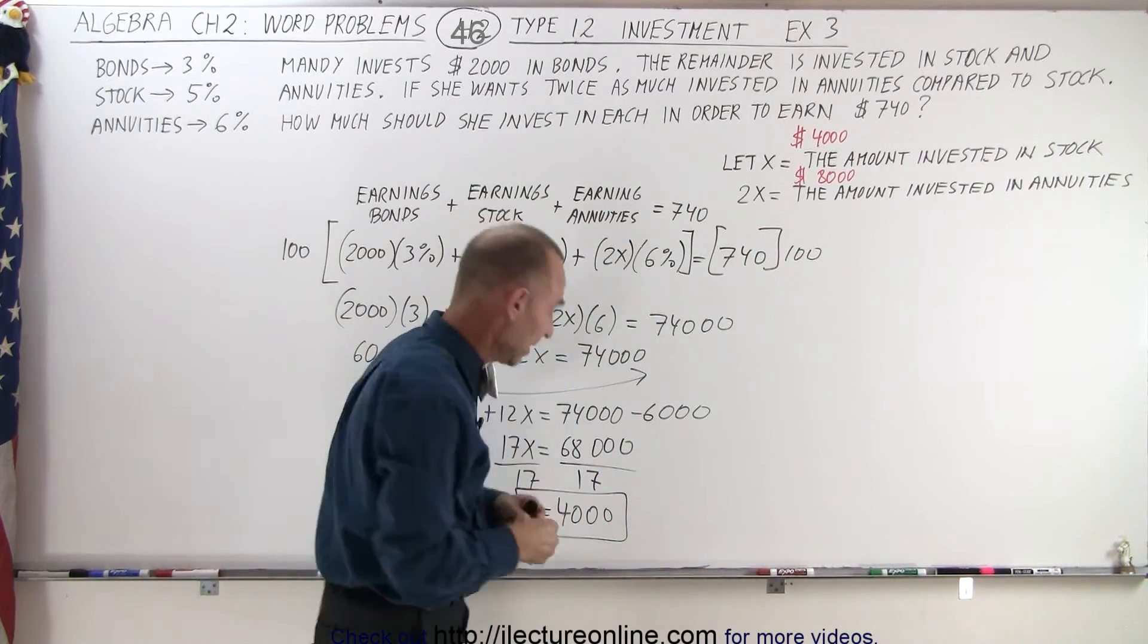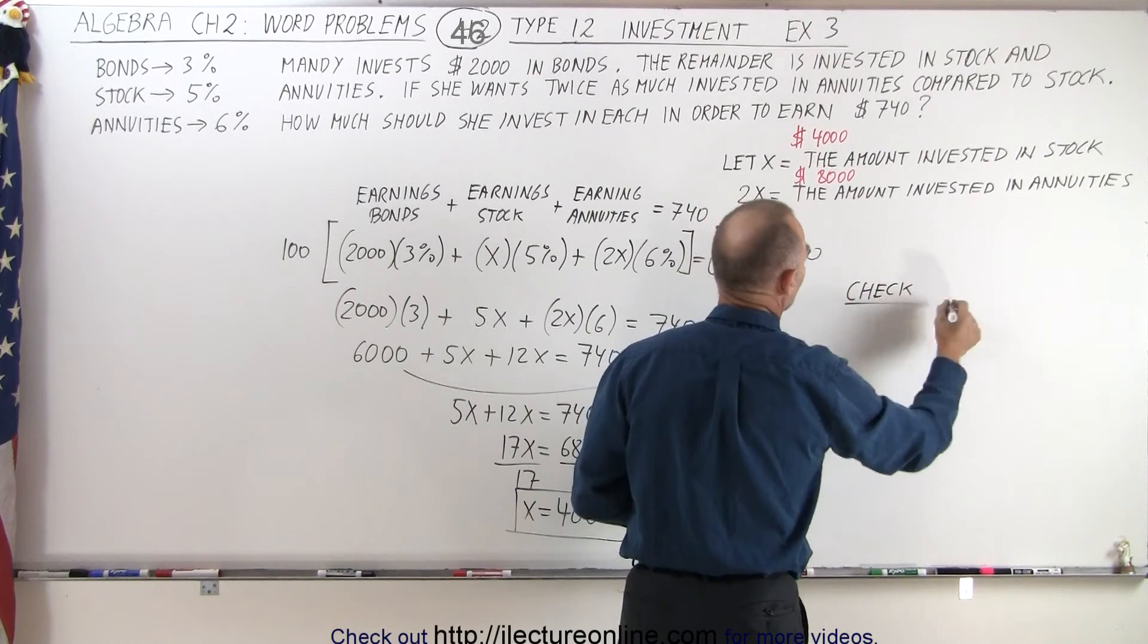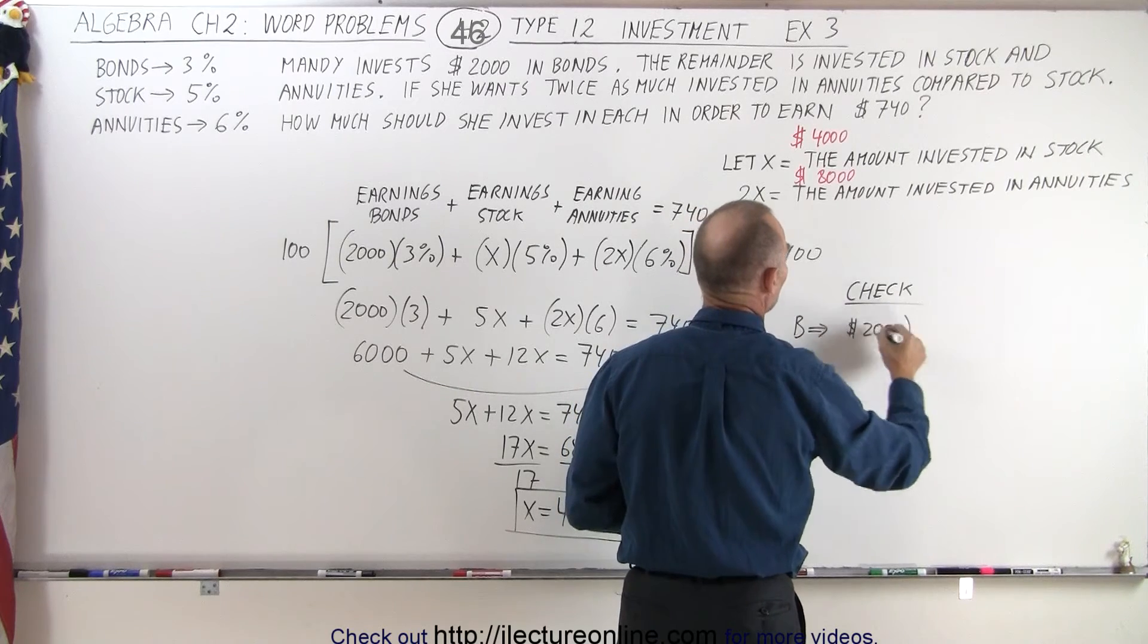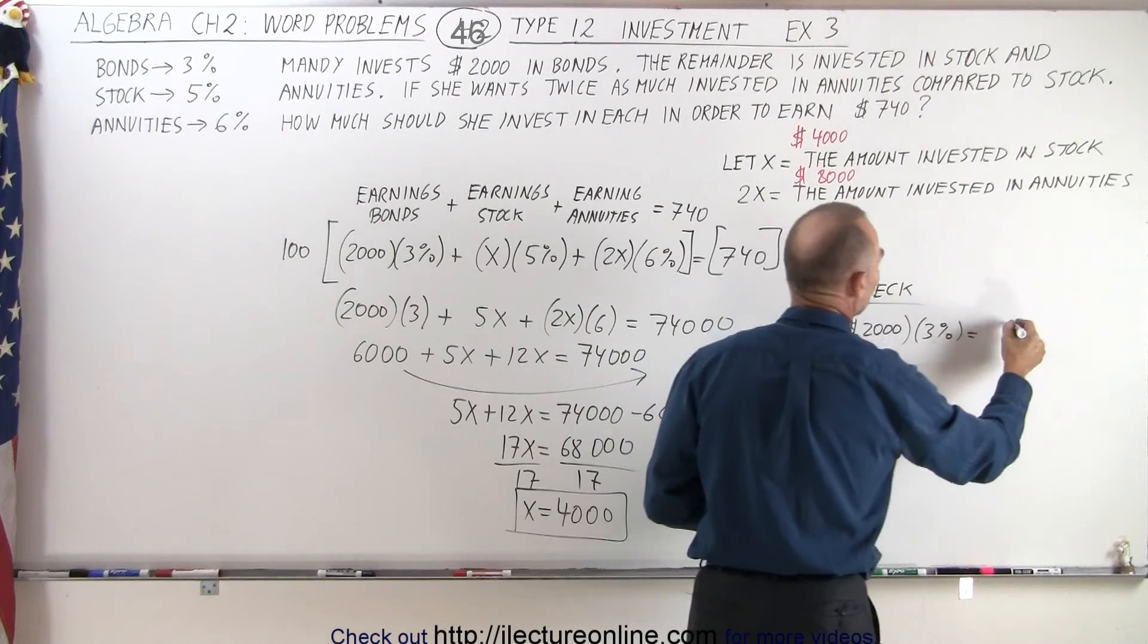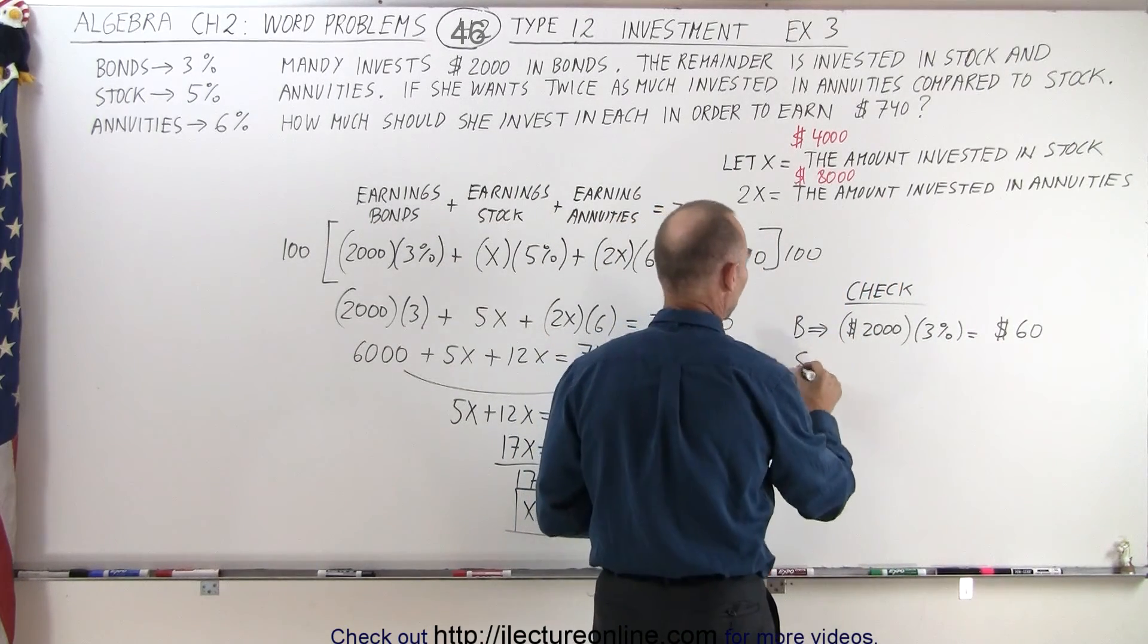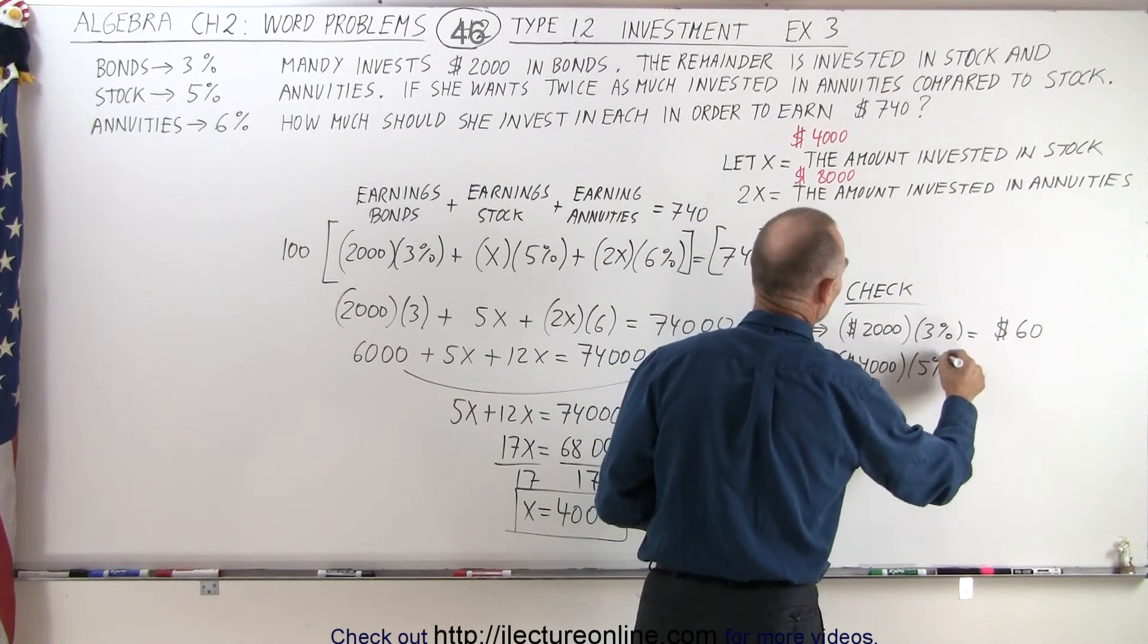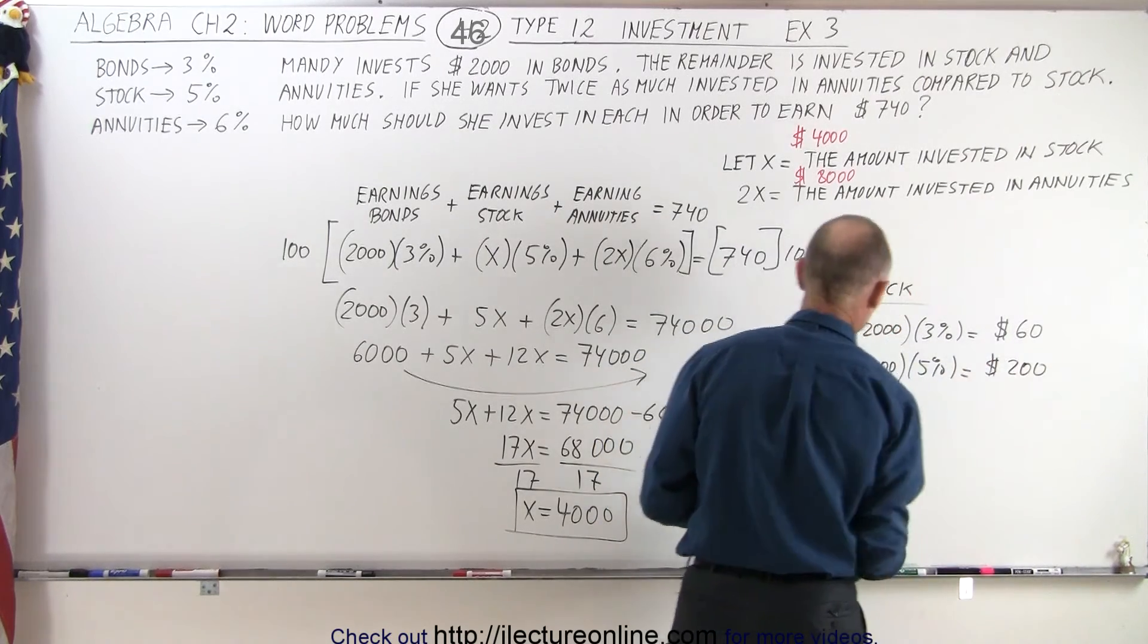Of course, we should check to see if we did this correctly. So let's add up all the earnings. For bonds, we take the $2,000 and invest it at 3%, which gives us earnings of $60. Then for stock, we take $4,000 and invest it at 5%, which gives us $200 in earnings.